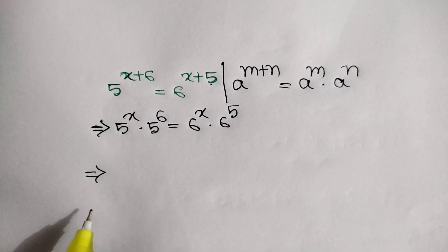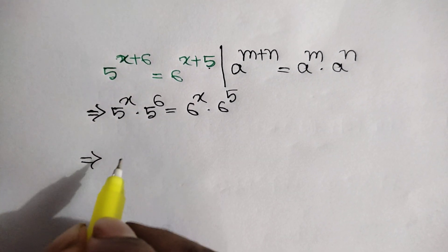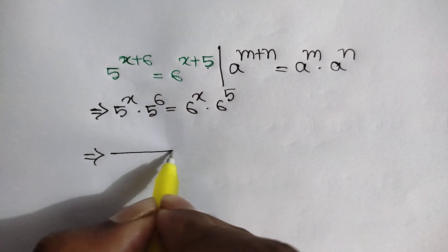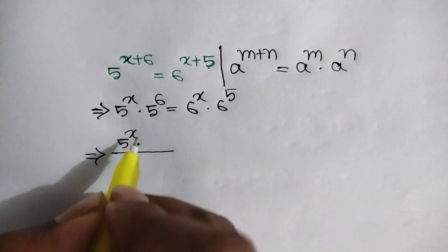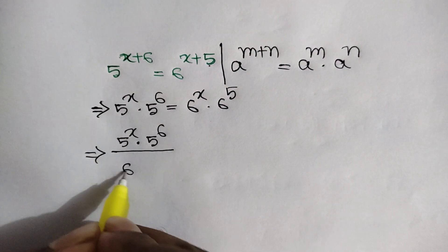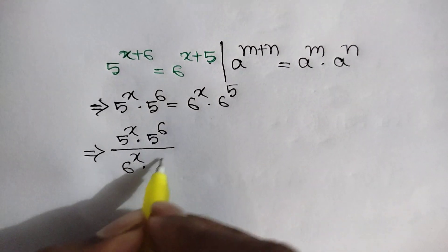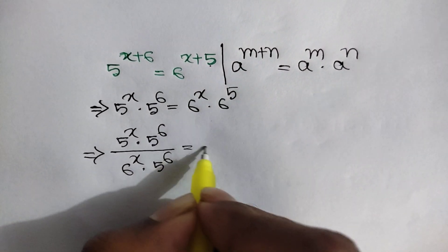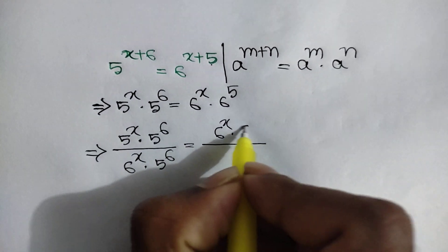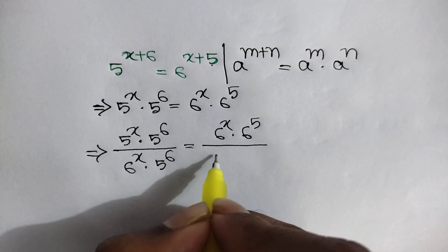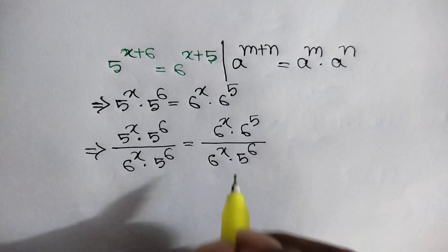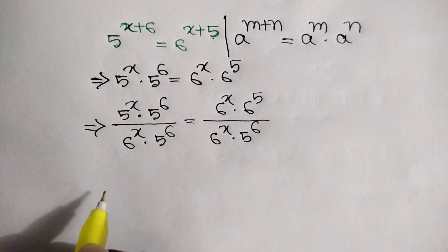Now divide both sides by 6 to the power x times 5 to the power 6. We can write: 5 to the power x times 5 to the power 6 over 6 to the power x times 5 to the power 6 is equal to 6 to the power x times 6 to the power 5 over 6 to the power x times 5 to the power 6.